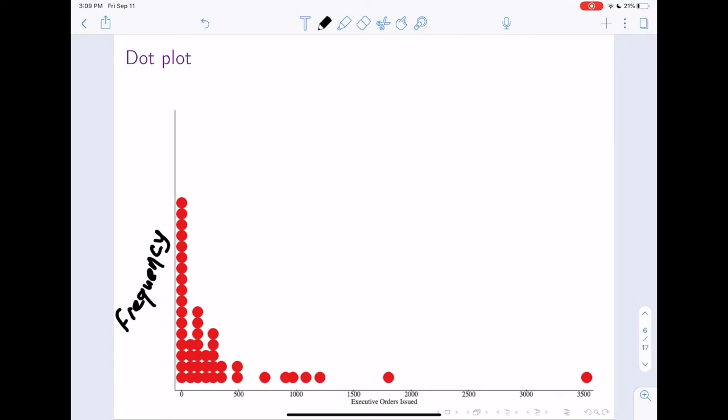So we see that there's quite a few presidents that have done very few executive orders. But then we see there's a handful of presidents who've issued quite a lot. And we see sort of starting at 500, we have a little under 500, we have two.